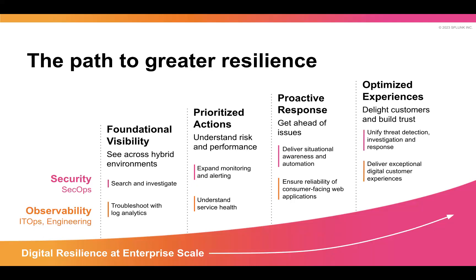It starts with foundational visibility into your events across any number of environments. Next, as you start to analyze an increasing amount of data, you'll also have a greater need to prioritize what to act on. Once you have visibility and are empowered to prioritize better, you can become more proactive to help detect and address potential problems before they become customer-facing issues. Finally, with all these elements in place, organizations can focus on optimizing their digital experiences.